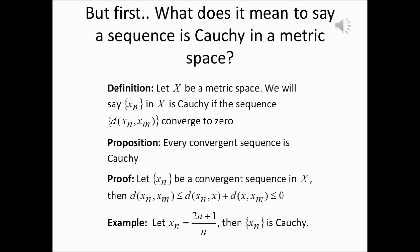We have the following statement: every convergent sequence is Cauchy. To see this, we assume that x_n is a convergent sequence in X which converges to some x in X. We then have to show that the limit as n and m go to infinity of the ordinary distance between the n-th term and the m-th term is going to be zero.